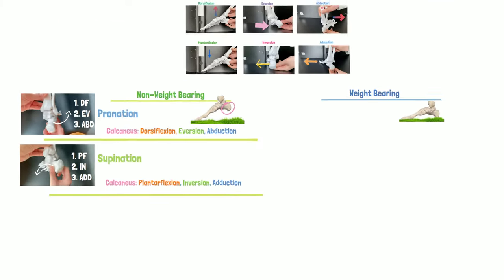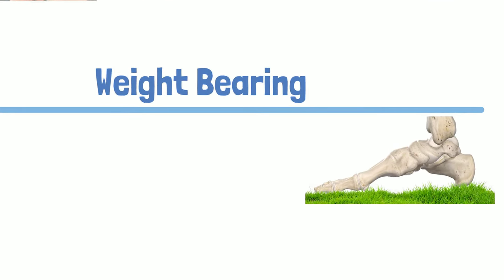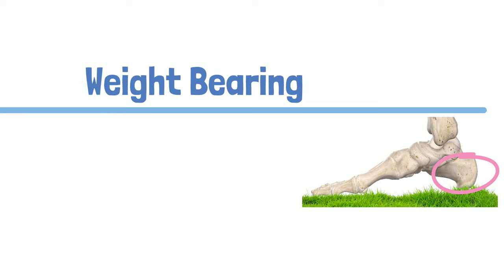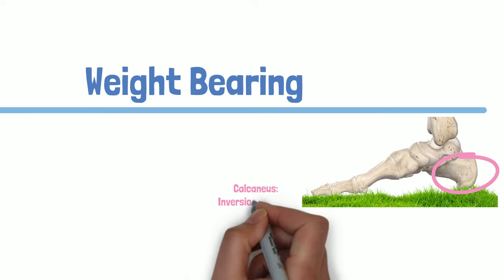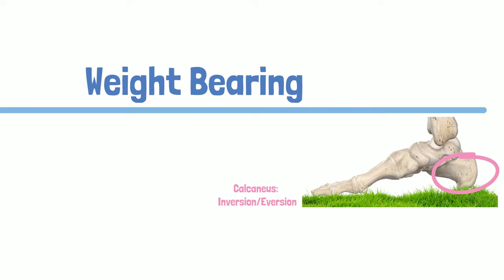Now let's examine weight bearing elements. In this case calcaneus will still move but only in the frontal plane through inversion and eversion. Other movements are not possible due to ground mechanically blocking the bone.